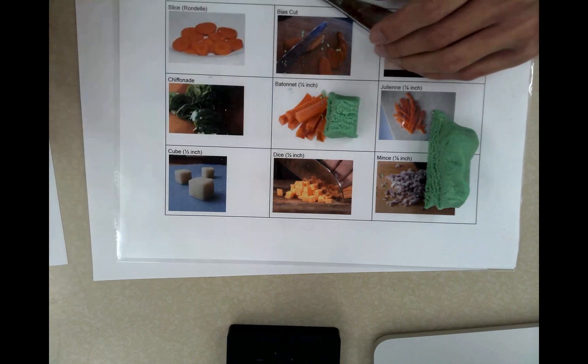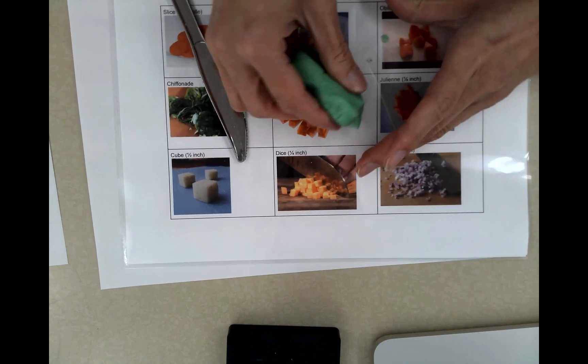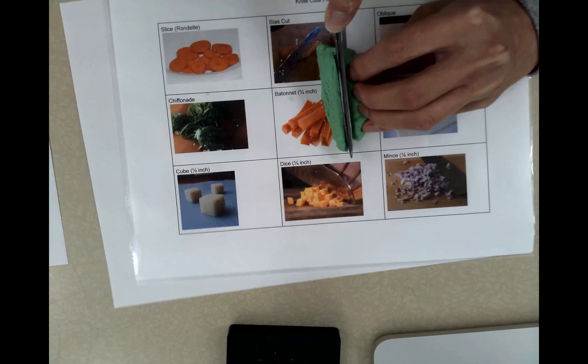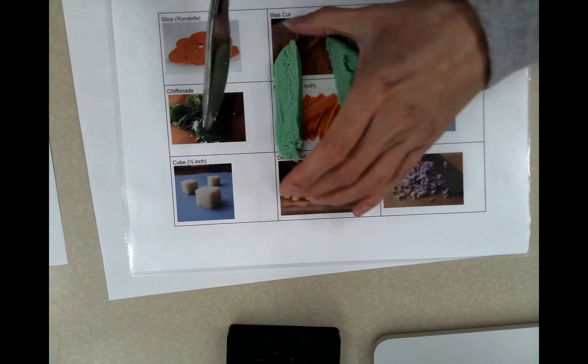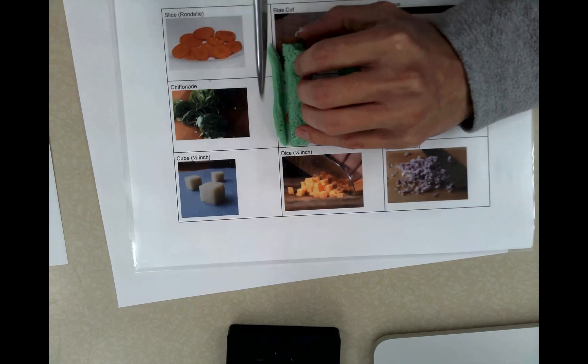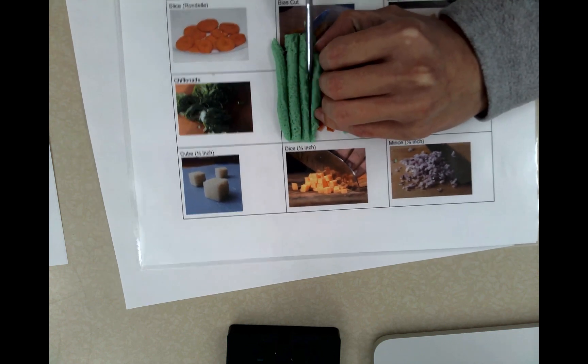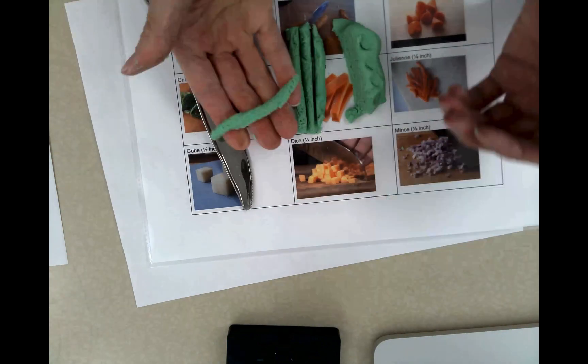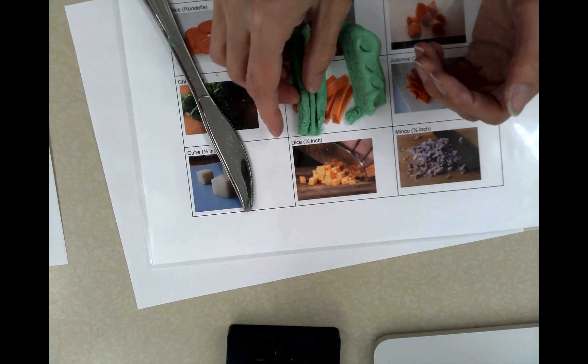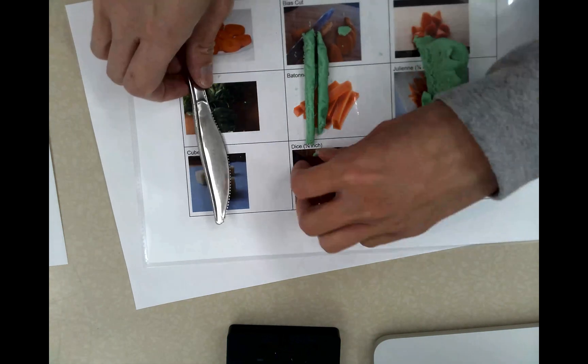And then the next one we'll do is a julienne. So it's more of a matchstick. So as thin as you can get with play-doh. We're going to try to make a real thin slice. And then we're going to again make a real thin slice like thin french fries. So that we have those julienne matchstick cuts.